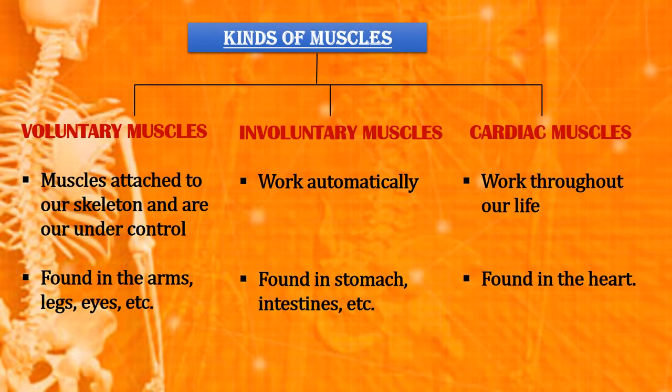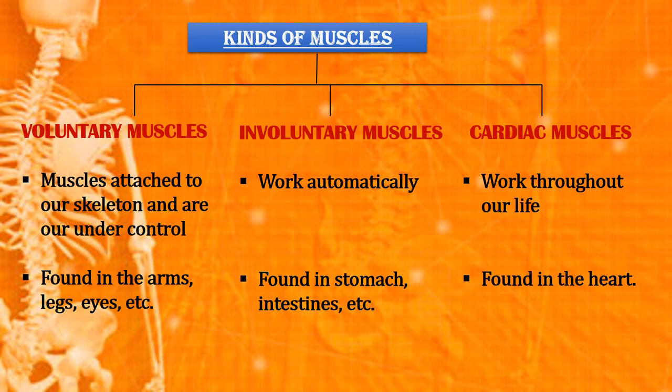There are three kinds of muscles: voluntary muscles, involuntary muscles and cardiac muscles. Voluntary or skeletal muscles are attached to our skeleton and are under our control. These muscles are found in the arms, legs and eyes. For example, if you wish to lift your school bag, you can do that.